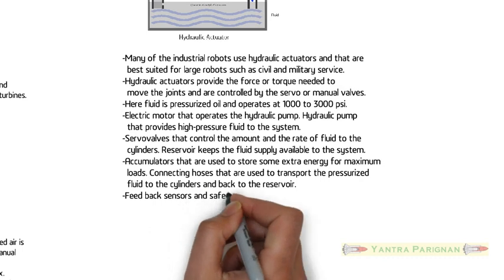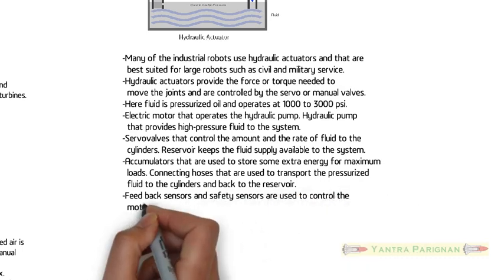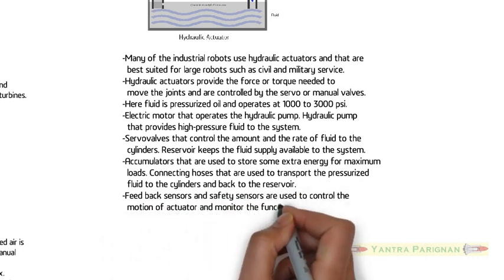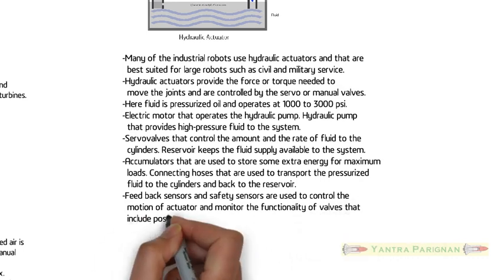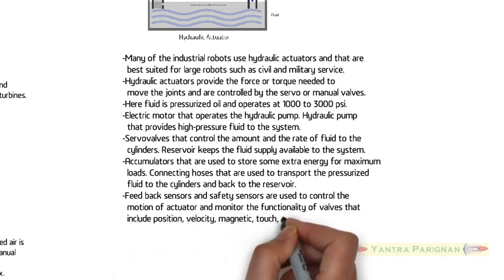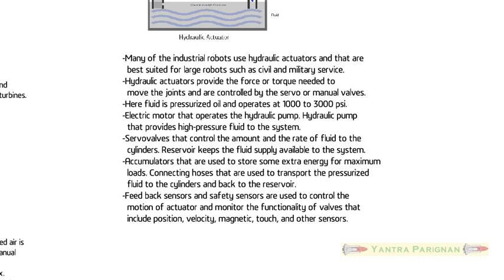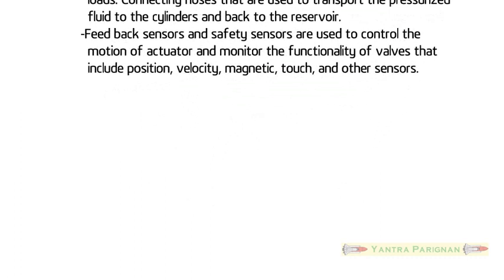Connecting hoses are used to transport the pressurized fluid to the cylinders and back to the reservoir. Feedback sensors and safety sensors are used to control the motion of actuator and monitor the functionality of valves that include position, velocity, magnetic, touch, and other sensors.